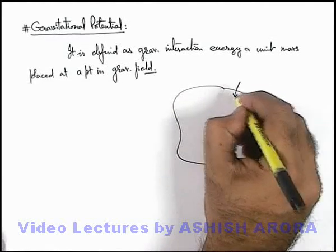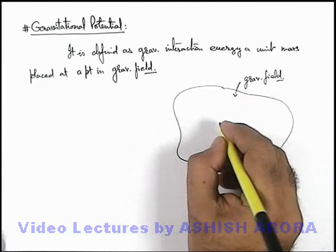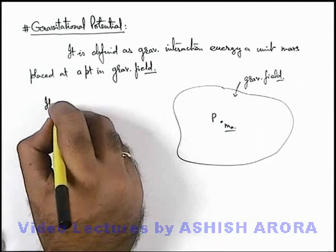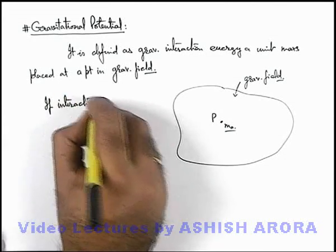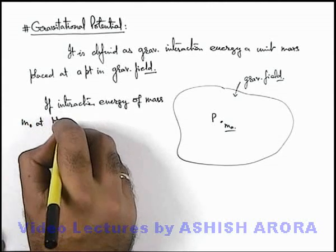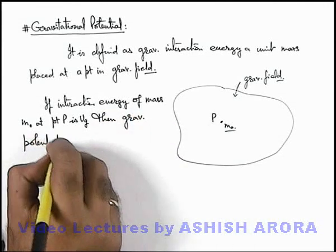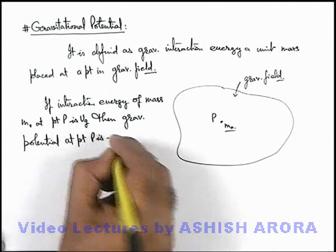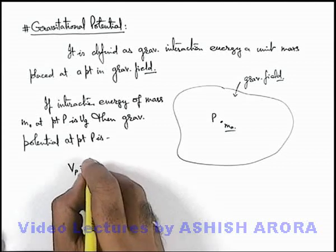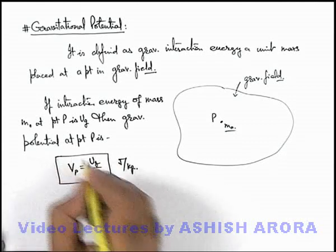Say we have a region of gravitational field, it may be due to a mass or a system of masses, and there is a point P in it where a test mass m₀ is placed. If the gravitational interaction energy of mass m₀ at point P is Ug, then the gravitational potential at point P is defined by the letter V, and we can write V at point P as Ug divided by m₀. So its unit will be joules per kilogram.